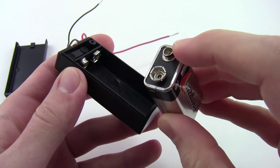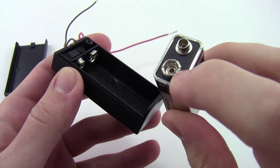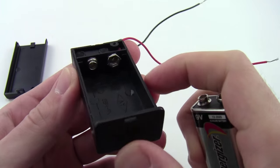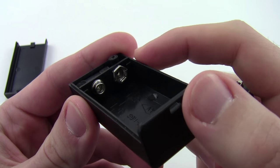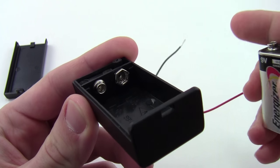Now take the 9-volt battery and note how it has two snaps on top: a male snap connector and a female snap connector. Inside the battery holder, there are two matching snaps: a female snap connector and a male snap connector.